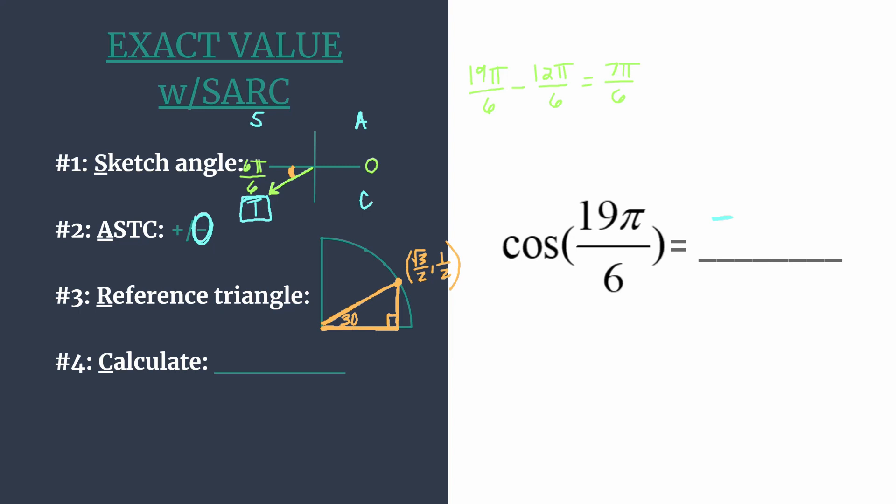All right, now we're ready to calculate. The cosine of an angle on the unit circle is simply the x-coordinate. So we can look at our first quadrant x-coordinate, take our sign from step 2, and we know that the cosine of 19 pi over 6 must be negative root 3 over 2. And we're done.